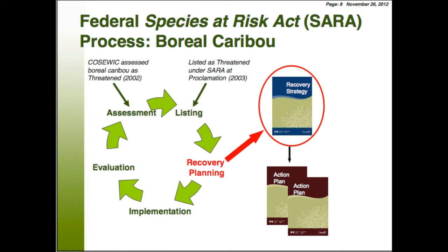This outlines the process for protecting caribou in Canada. First there's the assessment process: in 2000 and again in 2002, COSEWIC assessed boreal caribou as threatened because populations had decreased throughout most of the range, facing threat from habitat loss and increased predation — the latter possibly facilitated by human activities. Then there's the listing process. SARA came into proclamation in 2003, and at that time all species recommended by COSEWIC were automatically listed, including boreal caribou.